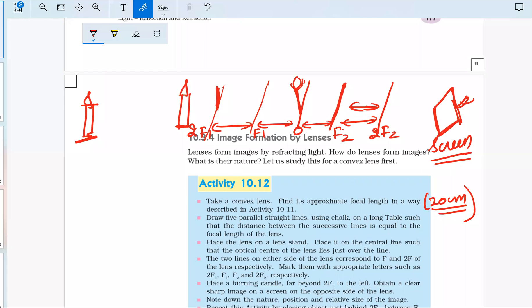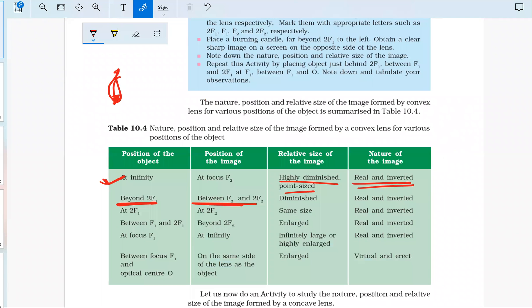When the object is at F1, the image will be formed at infinity. It will be obtained at a large distance, and the image formed will be highly enlarged.